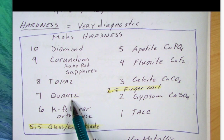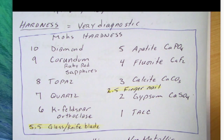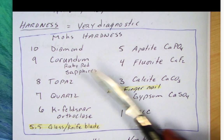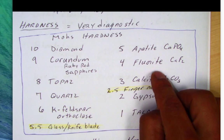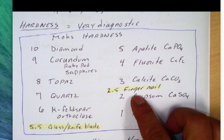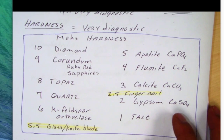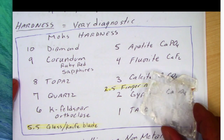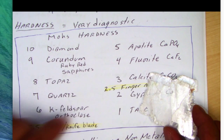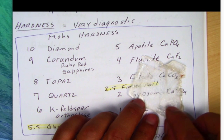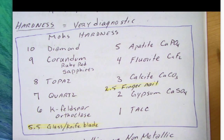Now we start getting to our common minerals. Quartz is at number seven, K-feldspar or orthoclase at number six, and then the important reference point — a knife blade at about 5.5. So if you can scratch a mineral with a knife, that mineral is softer than 5.5. Then we go to apatite, which is a calcium phosphate, fluorite (calcium fluoride), and calcite. Your fingernail is also a useful tool — if you can scratch a mineral with your fingernail, it's softer than about 2.5. Then number two is gypsum, and the softest is talc. Here is a mineral called selenite gypsum — you can see it has cleavage, and I can scratch it with my fingernail, so it's softer than 2.5.